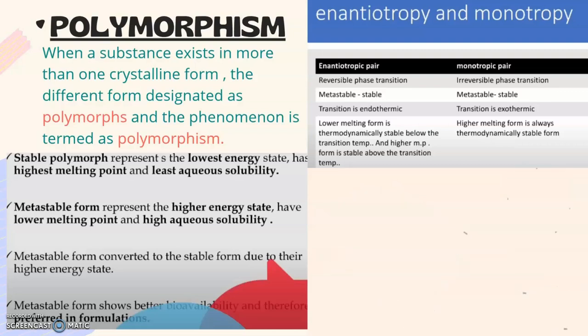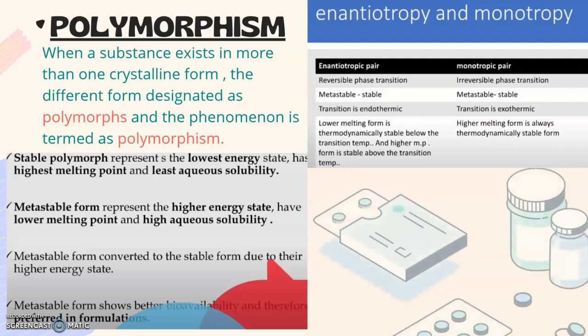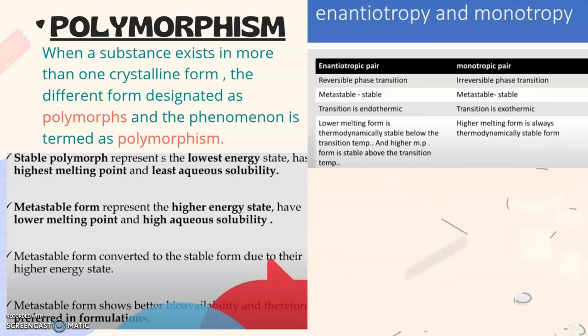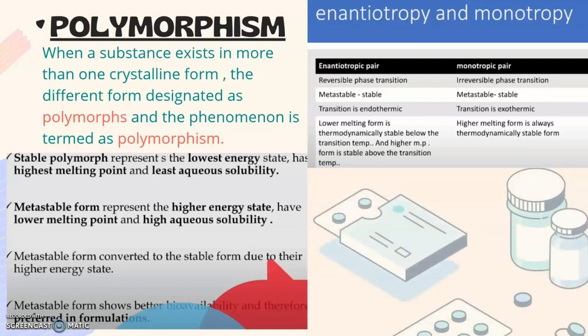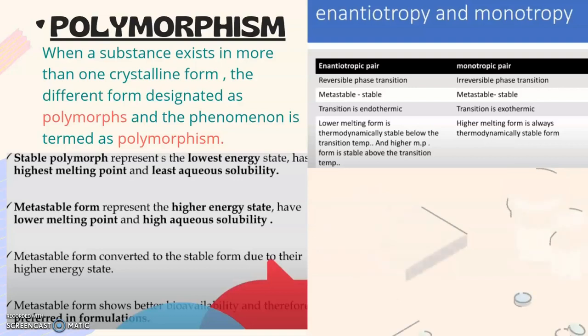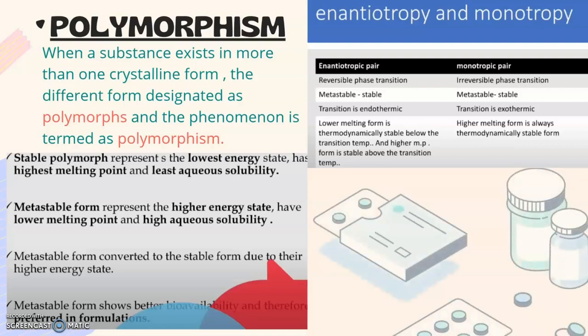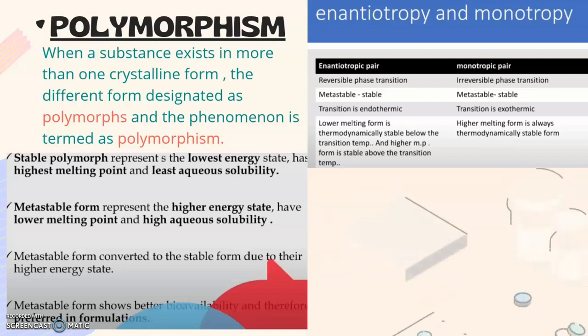Metastable form shows better bioavailability and therefore is more preferred in formulations. There are two types of pairs in polymorphism: enantiotropic and monotropic. In enantiotropic, we have reversible phase transition whereas in monotropic pair, we have irreversible phase transition. The metastable to stable conversion is same in both enantiotropic and monotropic pairs. The transition is endothermic in enantiotropic pair and exothermic in monotropic pair. In enantiotropic pair, lower melting form is thermodynamically stable below the transition temperature and higher melting point form is stable above the transition temperature. Whereas in monotropic pair, higher melting form is always thermodynamically stable form.